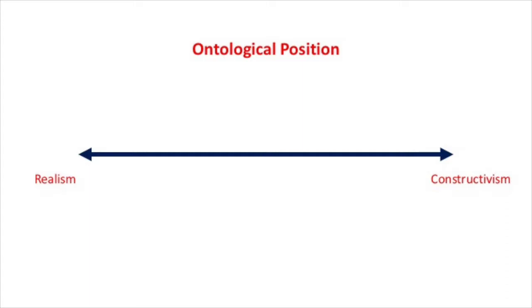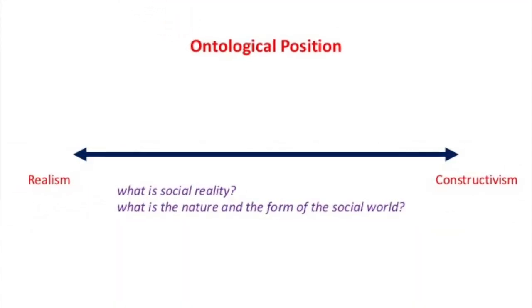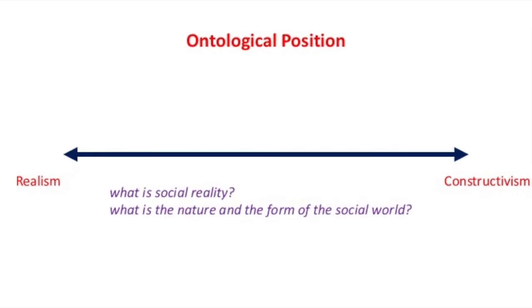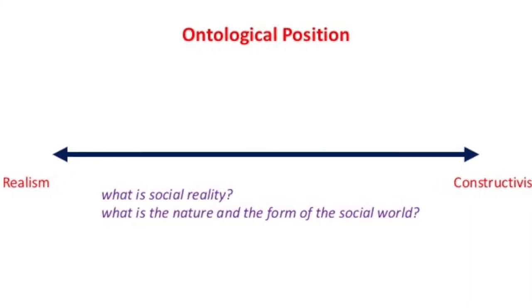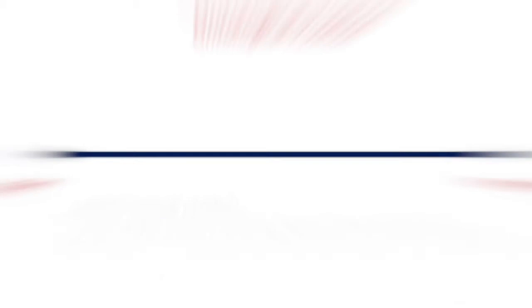Your ontological position will sit somewhere on a spectrum between realism, the world as an external reality independent of individual consciousness, or constructivism, there is no one reality but multiple realities. In determining your ontological position, you need to ask: What is social reality? What is the nature and form of the social world?